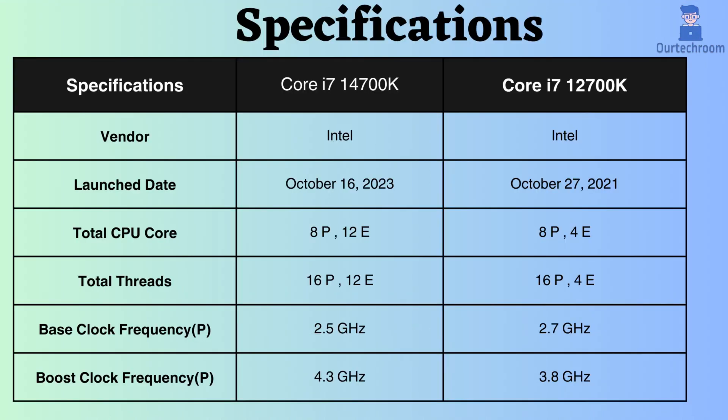The Intel Core i7-14700K was released two years after the launch of the Core i7-12700K. The i7-14700K became available on October 16, 2023, while the i7-12700K was released on October 27, 2021.